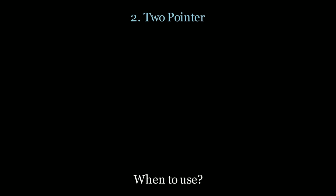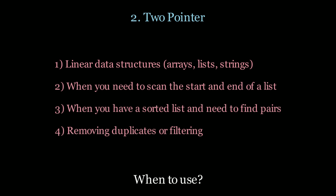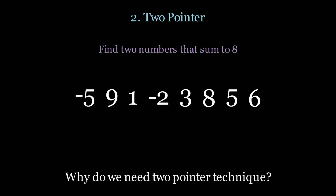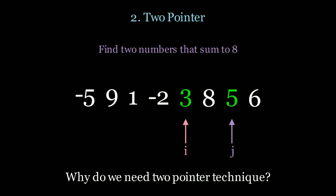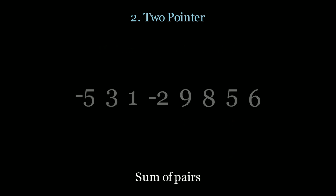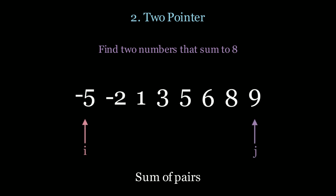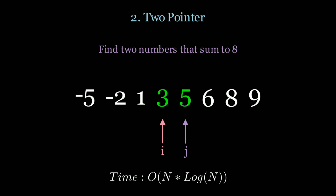Next up we have the two pointer pattern. Use this for linear data structures when you need to scan the start and end of a list, when you have a sorted list and need to find pairs, or when you need to remove duplicates or filter through the list. Without this pattern, finding two numbers that sum to eight requires a double for loop — O(n²). With the two pointer technique, we sort the array first, place two pointers at the ends, and move them based on whether the sum is less than or greater than the target. We find our result in O(n log n) time.